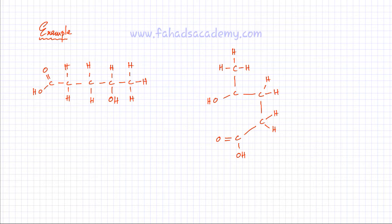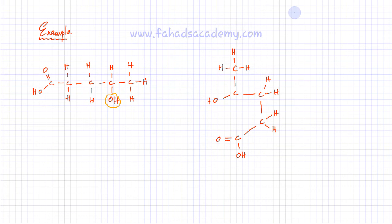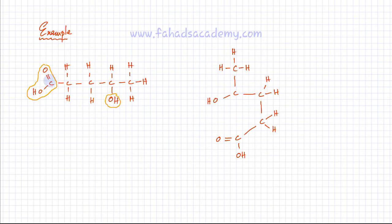I have a molecule here — a carbon atom chain with five carbon atoms in a row. From one side, on the second carbon atom, there's an OH group attached. From the other side, on the first carbon atom from the left, there's a carboxylic acid group attached. Let's highlight the carbon chain — five carbon atoms one after the other. When looking at isomers, try to ignore the hydrogens; they're always there and can be added later.